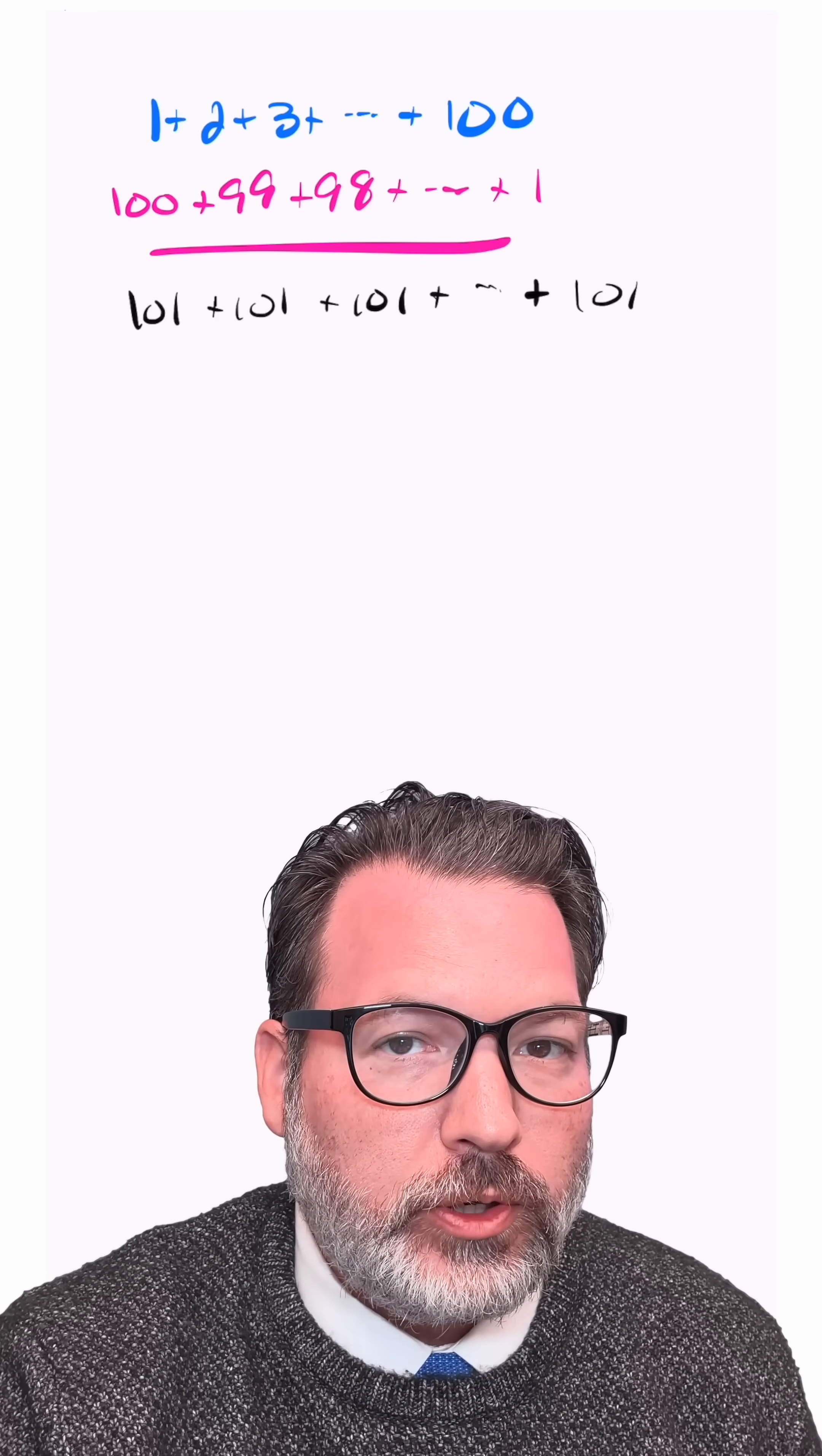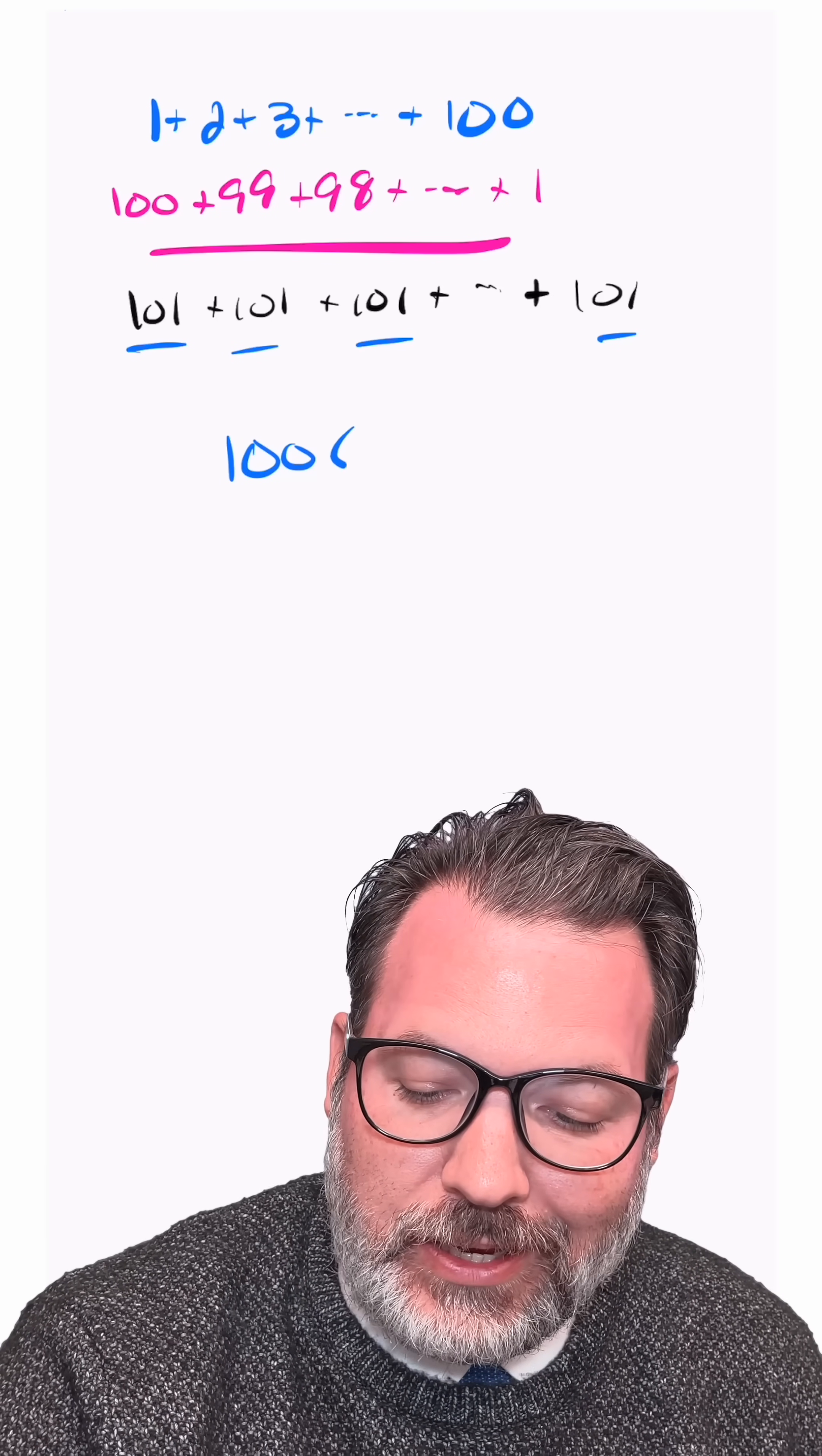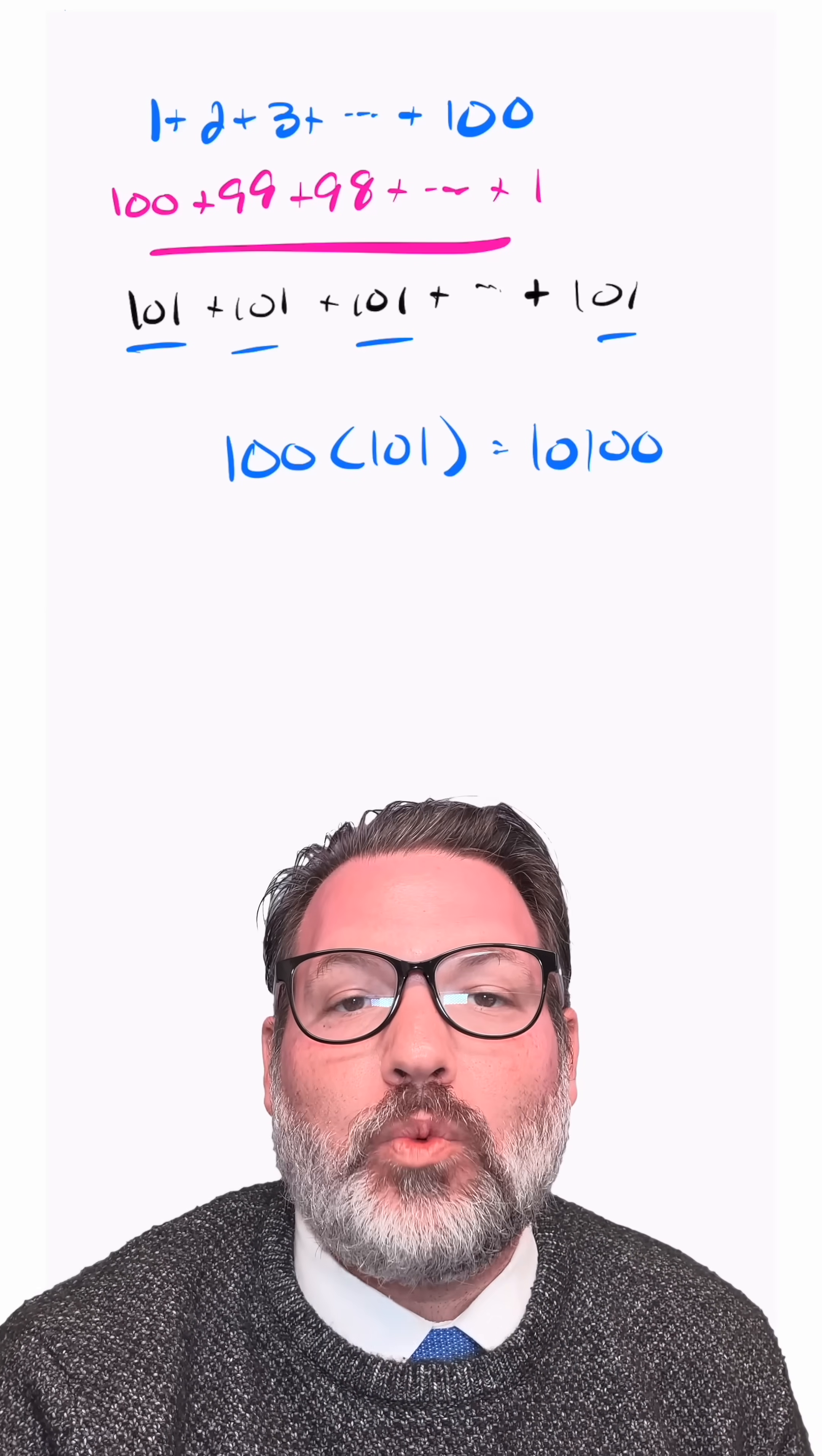So now we have the potential for a shortcut. We know that we're just repeatedly adding a bunch of 101s. How many 101s? Well, our original list had 100 numbers in it, so there must be 100 different vertical sums. So Gauss has taken a really complicated problem, adding 1 plus 2 plus 3 all the way up to 100, and turned it into a very simple product: 100 times 101 is 10,100.